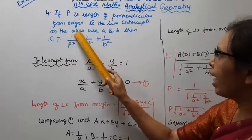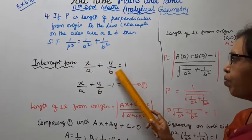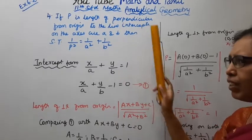For intercept on the x-axis A and B, the intercept form is X by A plus Y by B equal to 1.